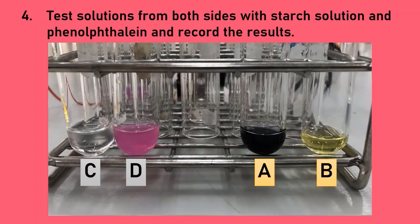Record the results on your report. Test tube A and test tube B contain solution from the anode side (positive). Test tube C and test tube D contain solution from the cathode side (negative).